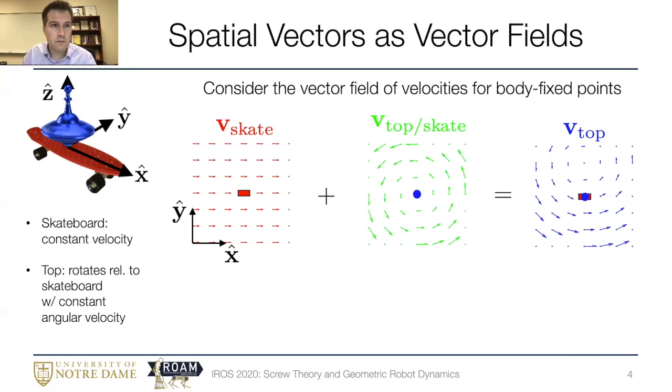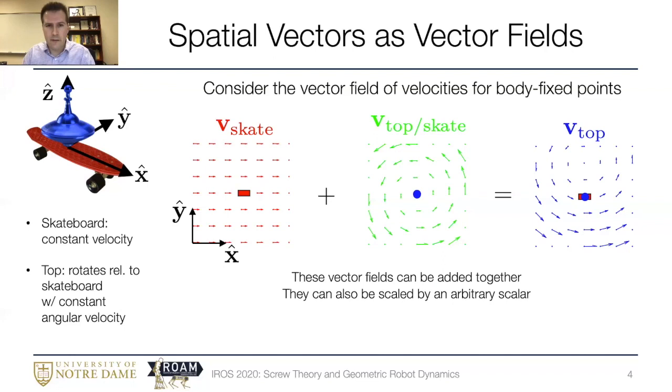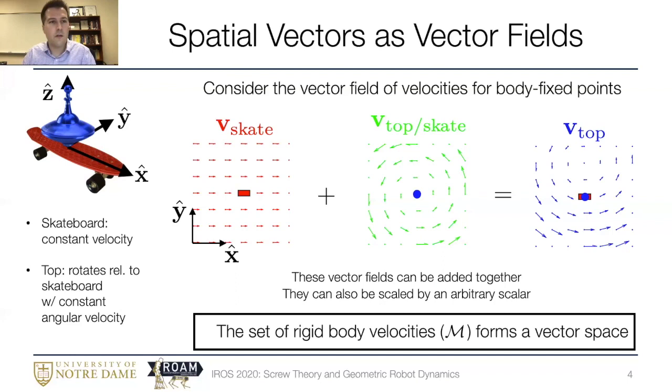So let me make a couple of observations. One, as I've argued, we can add up any two vector fields of this type and that corresponds to adding up relative motions. Also if I have any of these vector fields I can multiply the vector field by an arbitrary scalar just by scaling each of the individual vectors in that field. So I have this set of objects I can add them together and I can multiply them by an arbitrary scalar. The implication then is that this set of objects, namely the set of rigid body velocities, forms a vector space that we'll denote as script M.